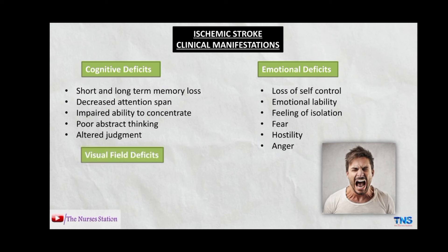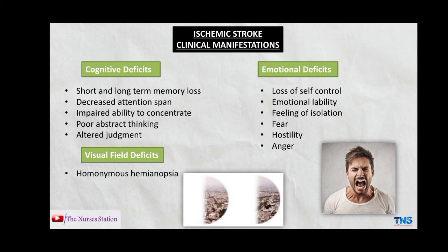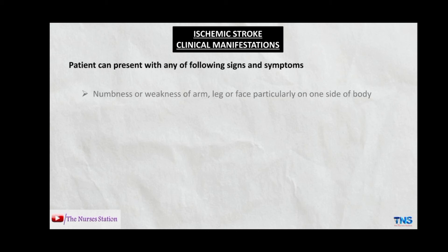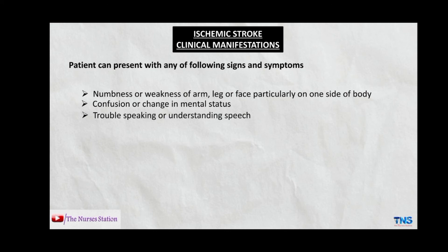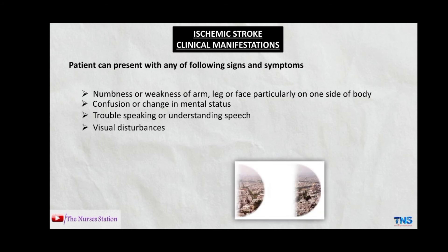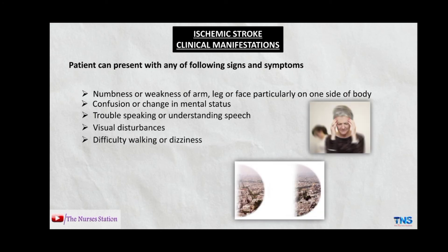Visual field deficits may include homonymous hemianopsia — blindness in half of the visual field in one or both eyes, as shown in this picture — loss of peripheral vision, and diplopia, that is double vision. When the patient comes to the emergency department, they may present with numbness or weakness of the arm, leg, or face particularly on one side of the body, confusion or change in mental status, trouble speaking or understanding speech, visual disturbances, difficulty in walking or dizziness, and sudden severe headache.